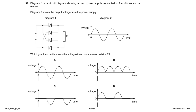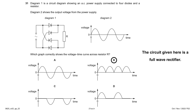A circuit shows an AC power supply connected to four diodes and a resistor — this is a full-wave rectifier. The full-wave rectifier removes all negative voltage and converts the full AC wave to DC (all positive). Options A and C are wrong because they show negative voltages; D would be correct only for a half-wave rectifier with two diodes. Option B is correct.